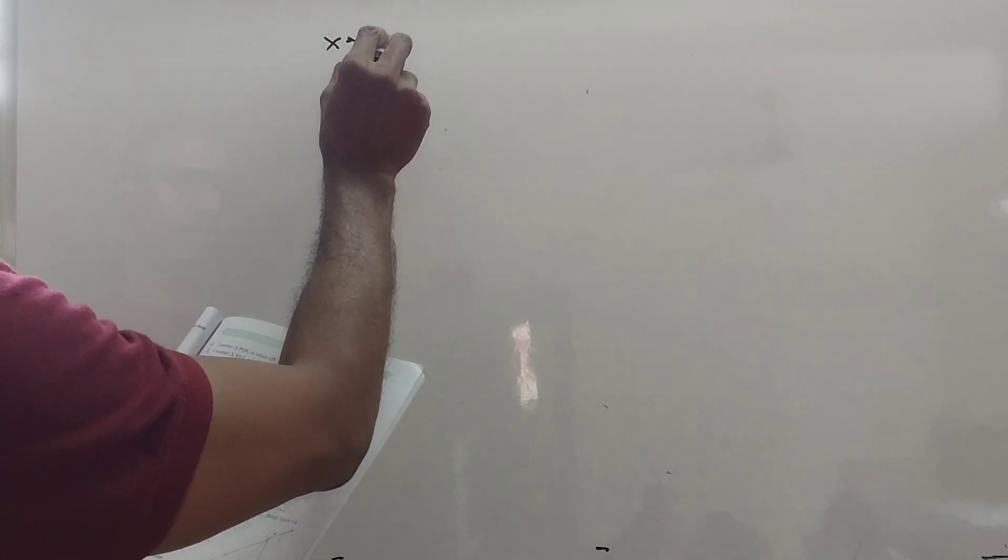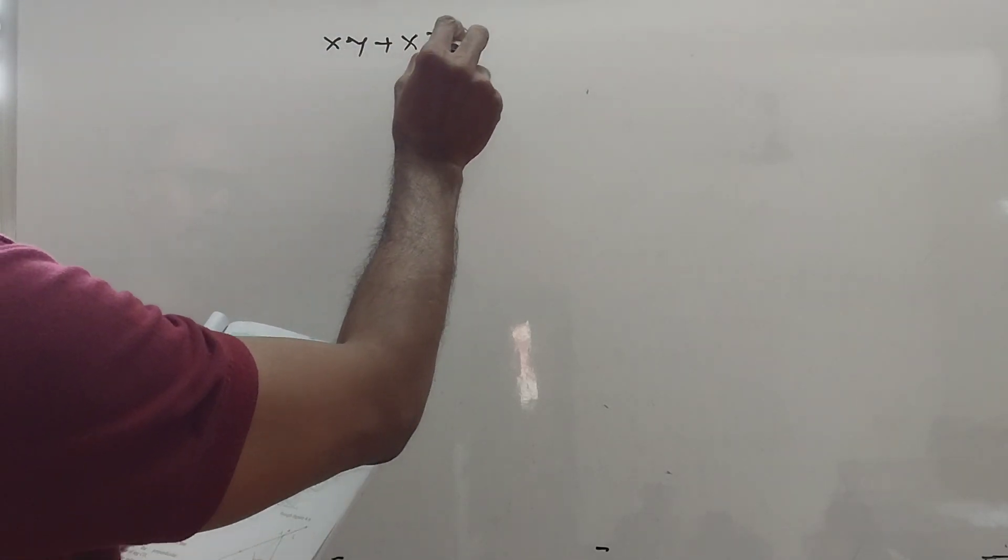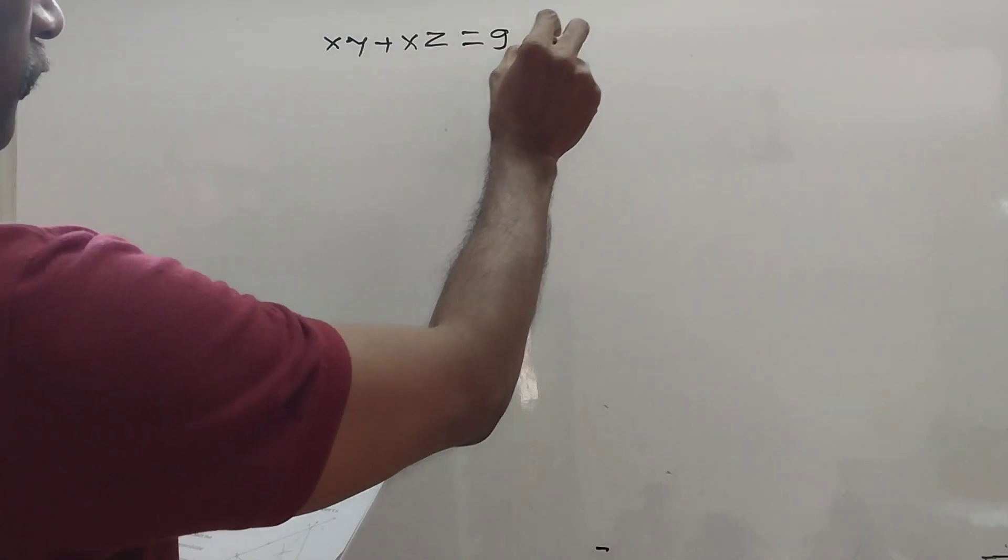Practice set 4.1, question number 2. Construct triangle XYZ in which YZ is equal to 6 cm, XY plus XZ is equal to 9 cm, and angle XYZ is equal to 50 degrees.